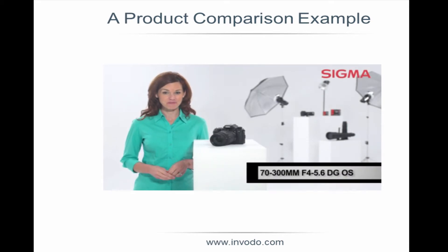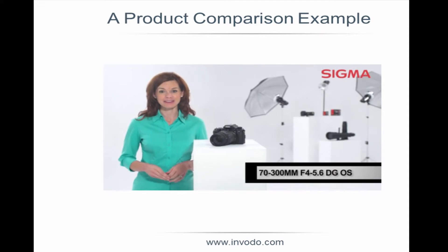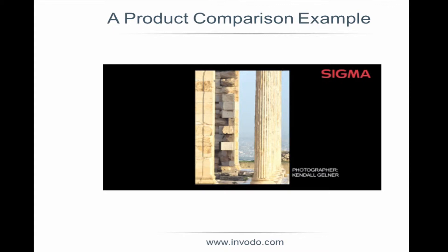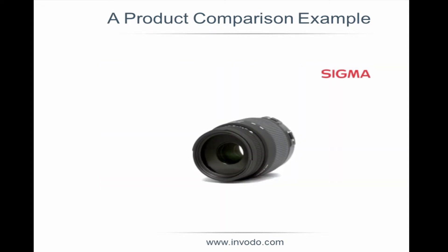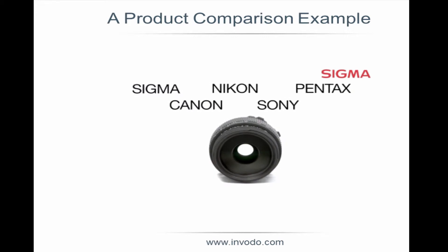The 70-300mm f4 to 5.6 DG from Sigma is a high-quality compact zoom lens, perfect for shooting candid portraiture, vacations, youth sports, and kids playing in the backyard. One thing Envoto worked with us on was that information shown on screen is often scrubbed back to. So we included all the mounts it's available in — both spoken and on screen — in every one of the videos, along with bullet points of key features. As we've discovered, people scrub back and watch these again. We have engagement spikes any time we have visual information repeated on screen.